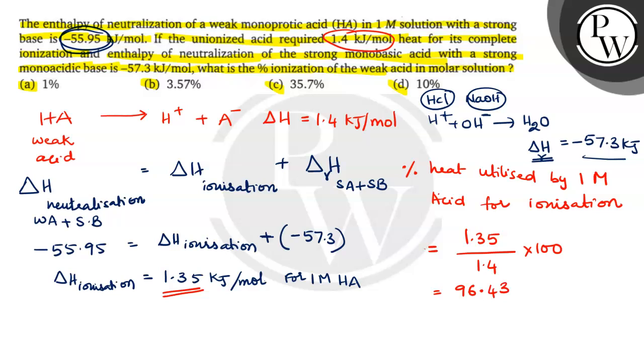Okay? So, therefore, acid ionized is equal to 100 minus 96.43. That is equal to 3.57 percent.